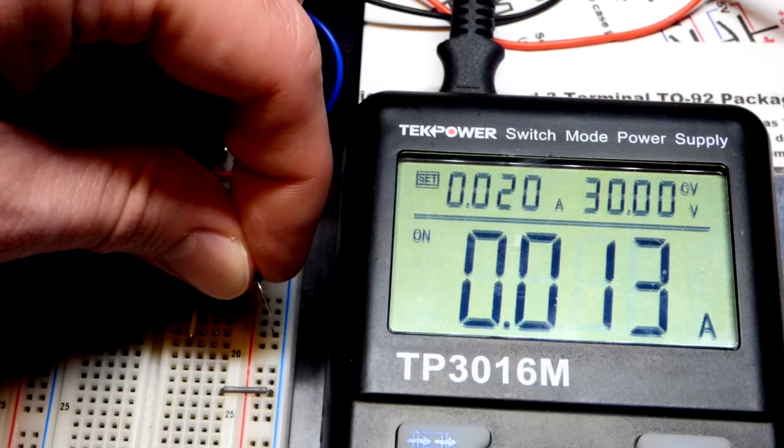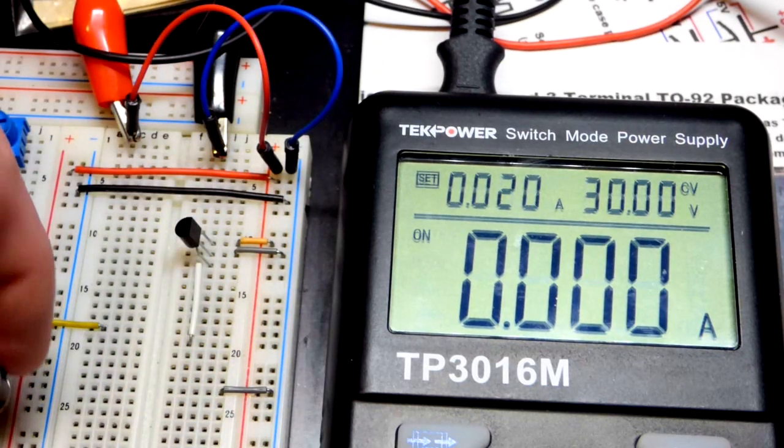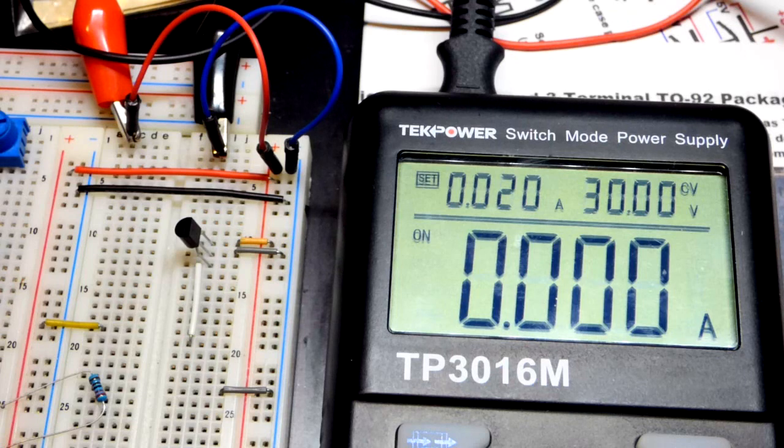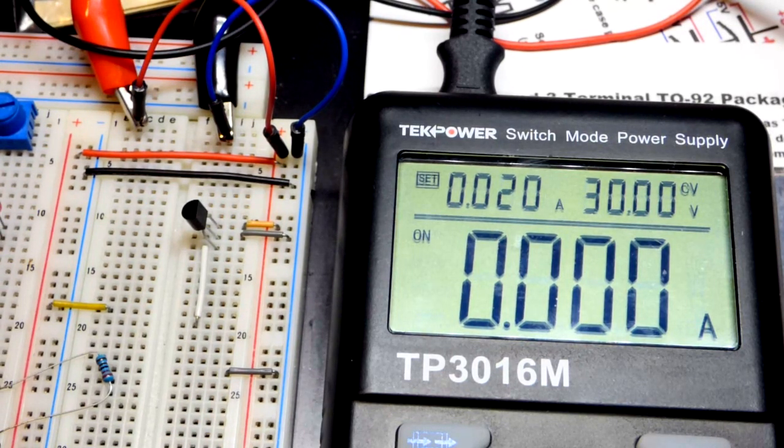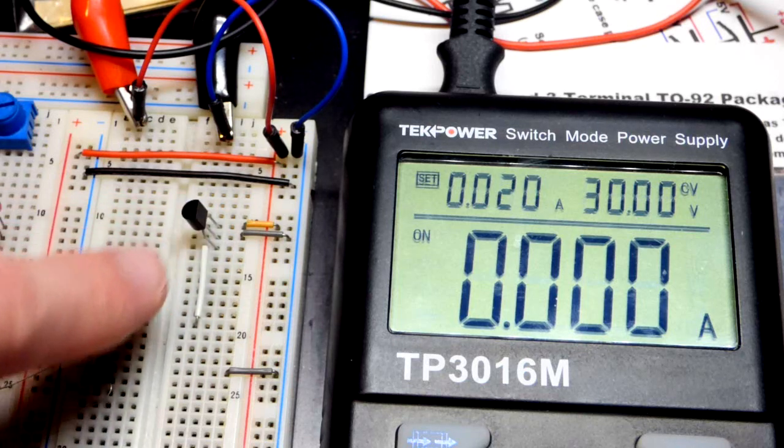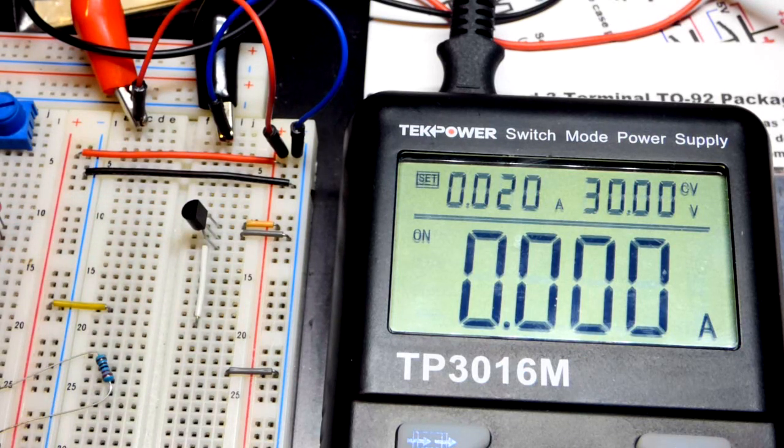Over here you can see we got twice the current. The resistors are going to get hot really quick, so I removed it. But twice the current was flowing that way, so it's looking at half the voltage under different loads.